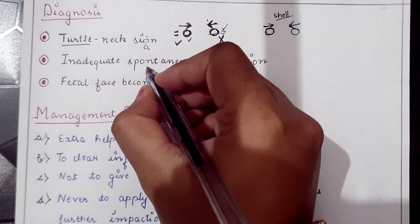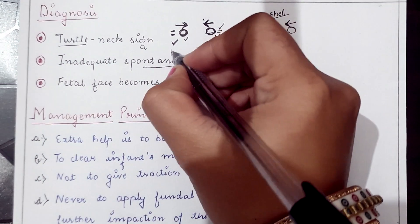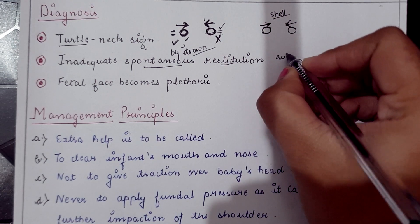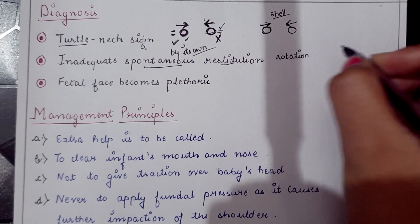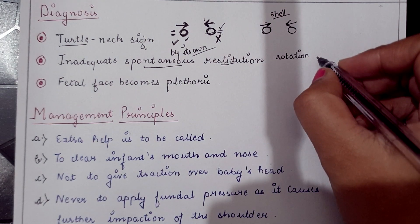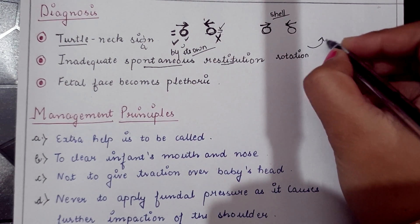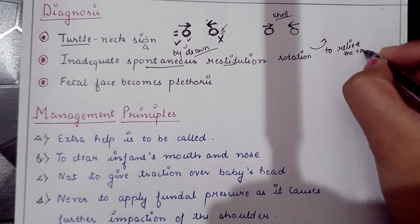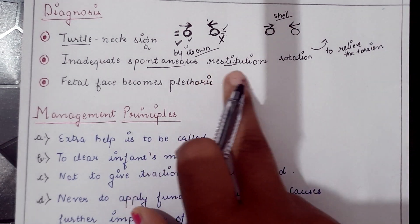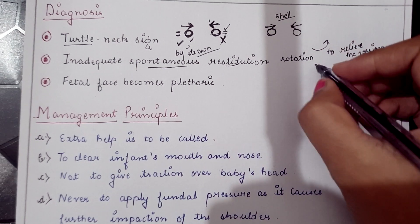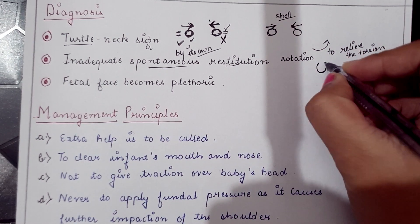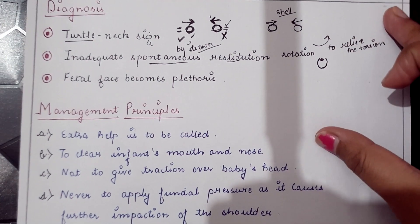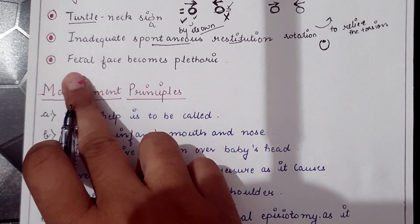The next diagnostic sign is inadequate spontaneous restitution — that is, improper restitution on its own. Restitution is the rotation of the baby's head to relieve torsion. If restitution does not occur spontaneously, the baby's head remains in the occiput anterior position even after delivery of the head with extension.